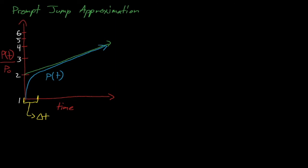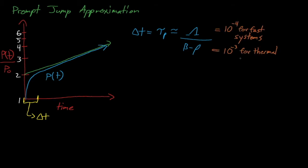The amount of time it takes for this prompt jump to occur is known as tau sub p, and it is about equal to the prompt neutron generation time divided by beta minus rho. Prompt neutrons cause fissions very quickly, so the time it takes for this prompt jump to happen is generally quite short — around 10 to the negative 4th seconds for fast reactors, and about 10 to the negative 3rd seconds for thermal reactors. The prompt jump approximation assumes that this prompt jump takes place instantly, and that we can assume the reactor settles on its asymptotic exponential power shape immediately.